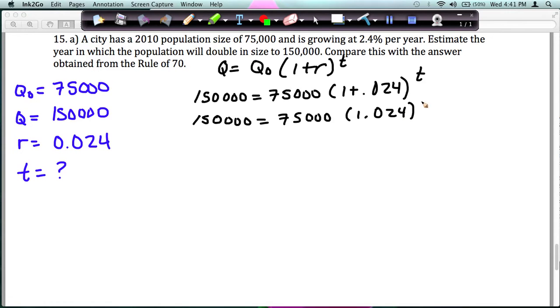Now be careful. Exponent comes before multiplication, so you cannot multiply the 75,000 times the 1.024. This T would need to come first, which you can't do. So we need to get rid of the 75,000.